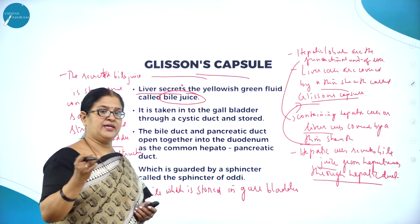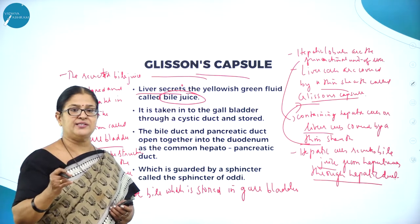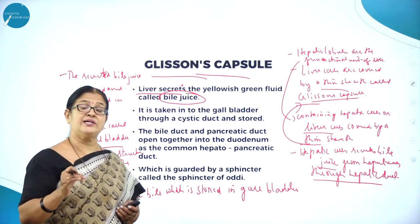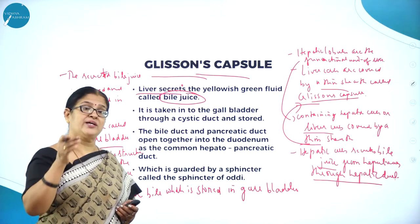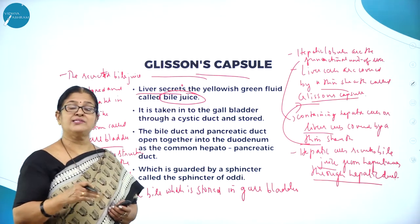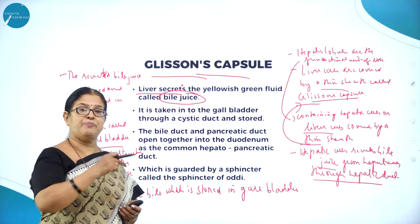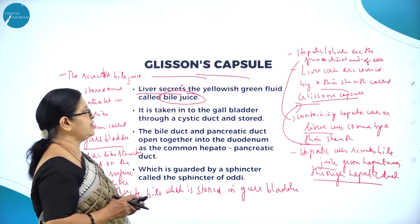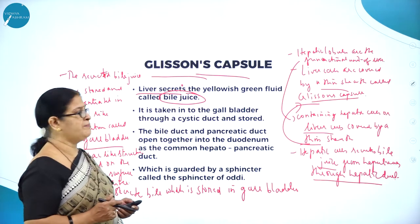There are two types of glands: endocrine glands and exocrine glands. Endocrine glands are called ductless glands where the secretions are directly poured into the bloodstream. These are called exocrine glands because the secretions pass through ducts. So the liver secretes a yellowish-green fluid called bile juice.